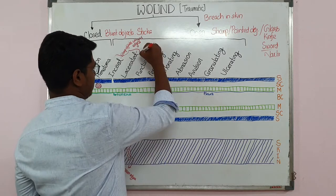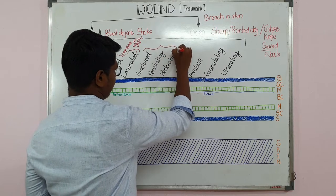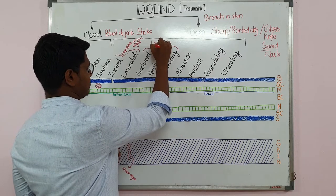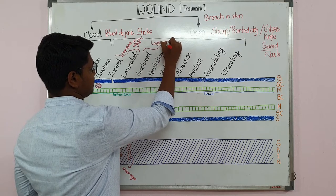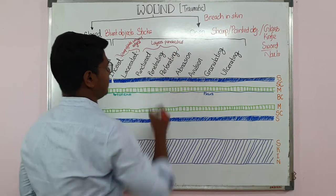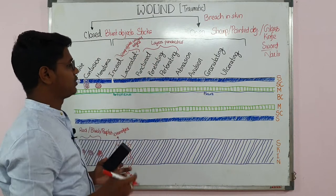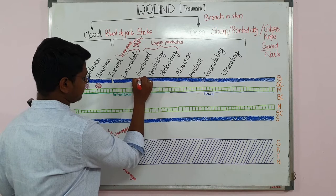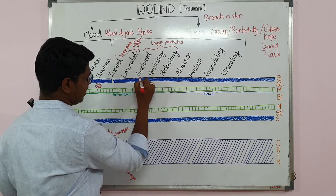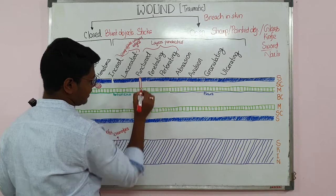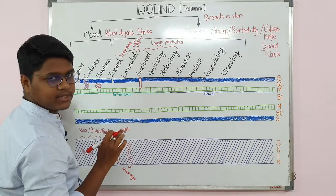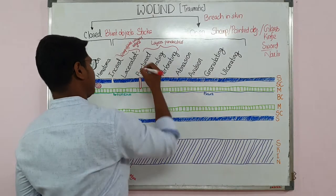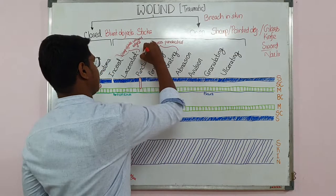The punctured, penetrating, and perforating wounds are classified on the basis of the layers penetrated. In a punctured wound there will be a small opening — like a nail puncturing — it may reach up to the muscle but it never communicates with the body cavity. Good examples are nail puncture and dog bite injury. In a punctured wound there is no space for drainage, so these wounds are more prone to infections.